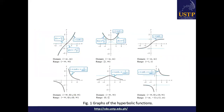Here are the graphs of the hyperbolic functions: the graph for sinh(x), cosh(x), tanh(x), csch(x) or 1 over sinh(x), sech(x) or 1 over cosh(x), and coth(x) or 1 over tanh(x). Remember from trigonometric identities that csch is the reciprocal of sinh(x), same with sech(x) and coth(x) — reciprocals of cosh(x) and tanh(x) respectively.